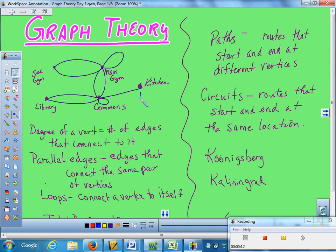The library has two edges. The secondary gym has two edges. Now, the question is, the main gym and the commons, how do you count those loops? Is it one edge or two? Well, since all the other edges count twice, if I go from the library to the commons, I'm counting it once at the library, once at the commons. So if you do a loop, you count it as two.